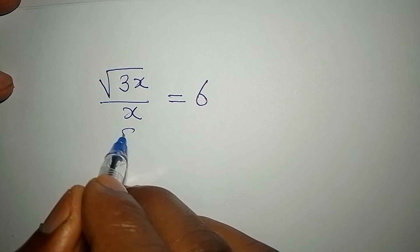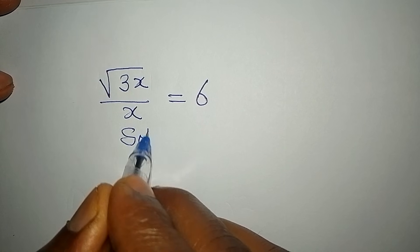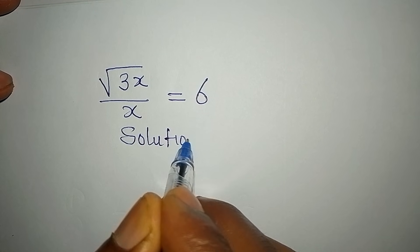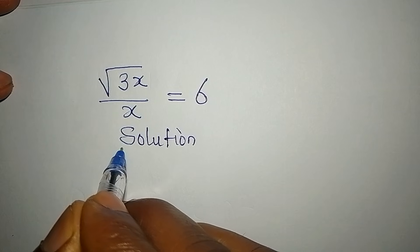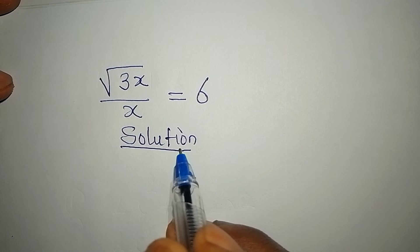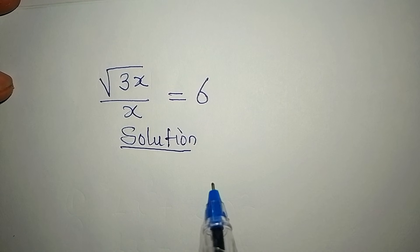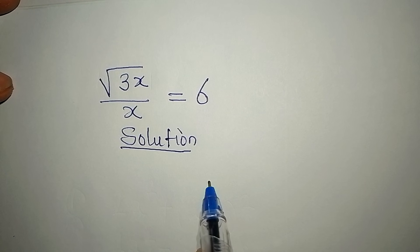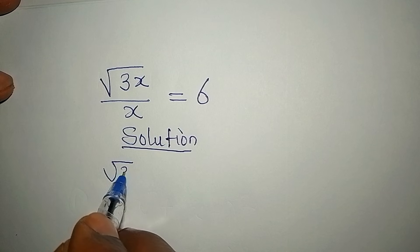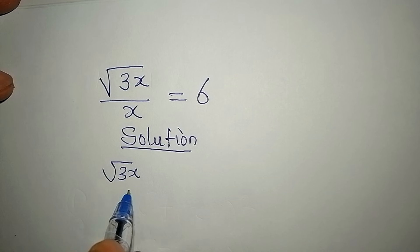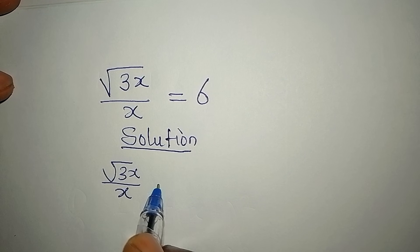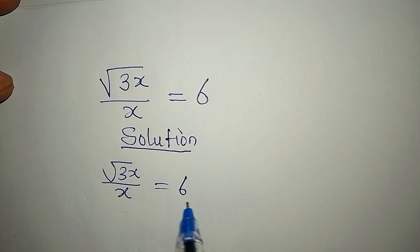Hello everyone, let's take a look at this problem quickly. I'm going to solve this problem in two ways. We have square root of 3x over x equals 6.